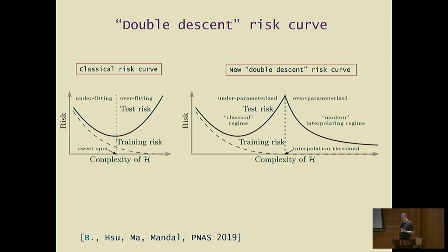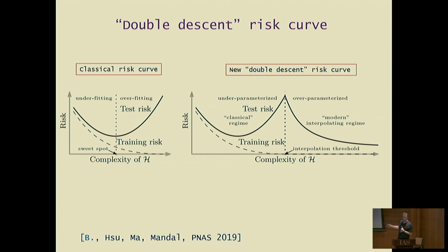Interestingly, in most examples we consider, the second descent appears to decrease indefinitely — of course not to zero, and it's not always lower than the bottom of the U — but it is a strictly decreasing function.